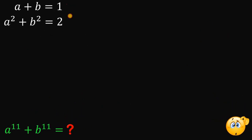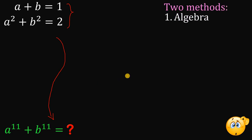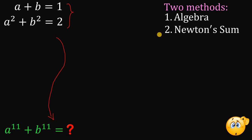Given these two equations — a plus b equals 1 and a squared plus b squared equals 2 — our main goal is to solve for the numerical value of a raised to 11 plus b raised to 11. I provide two solutions for this kind of question: the algebra approach and Newton's Sum. You can use algebra alone, Newton's Sum alone, or both at the same time.